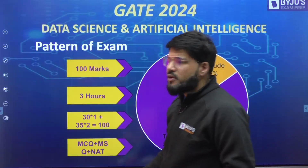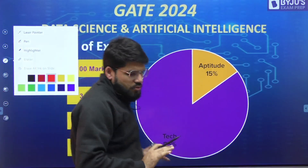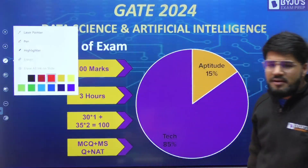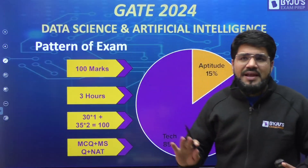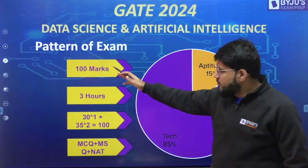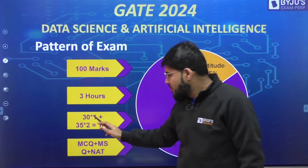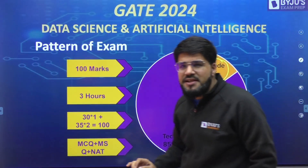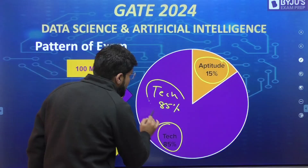First, a quick introduction: the pattern of the GATE DA exam is not different from any other branches. It is the very same pattern as other GATE papers — 100 marks, 3 hours (180 minutes), 65 questions total: 30 for one mark and 35 for two marks. There is still a 15% portion for aptitude and 85% goes to the technical portion.